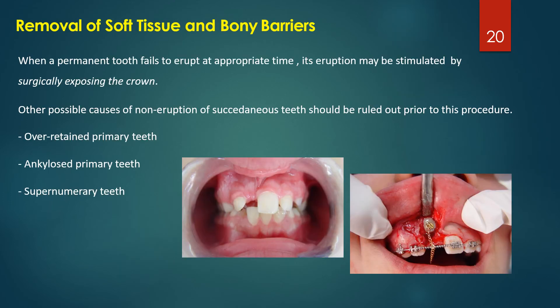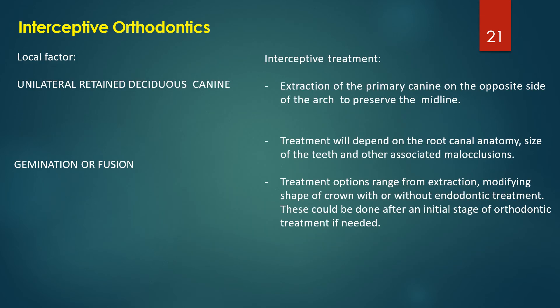Regarding removal of soft tissue and bony barriers: when a permanent tooth fails to erupt at the appropriate time, eruption may be stimulated by surgically exposing the crown. There are many causes for non-eruption of succedaneous teeth, which must be ruled out using radiographs and palpation. Common causes include over-retained primary teeth, ankylosed primary teeth, and the presence of supernumerary teeth.